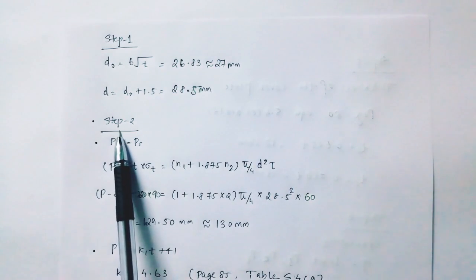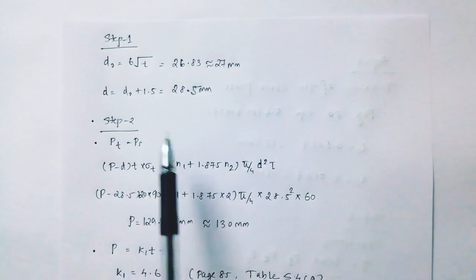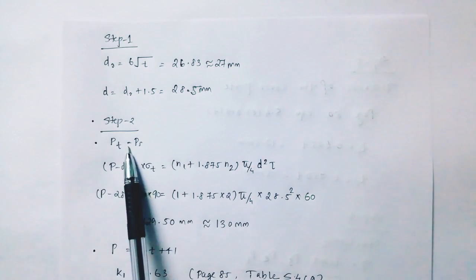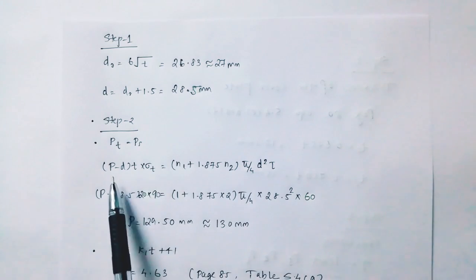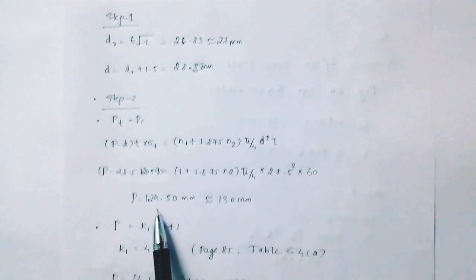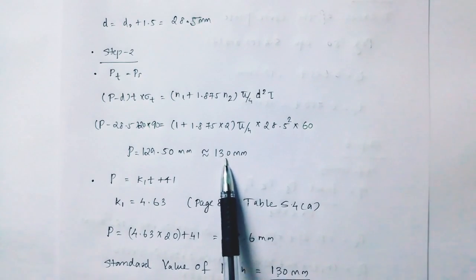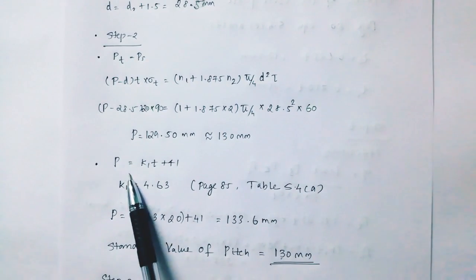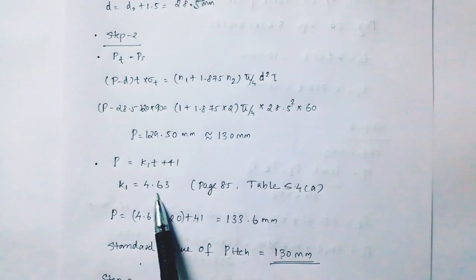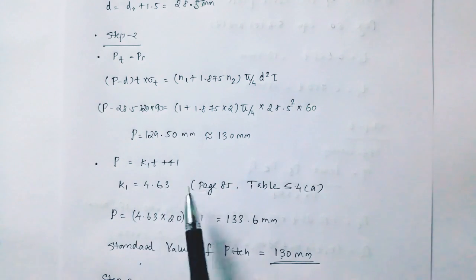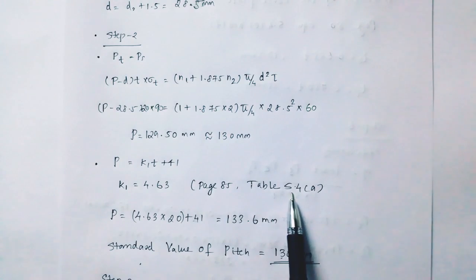Step 2: pt equal to psn. We will find p max and p minimum. Then p equal to 129.50, and p equal to k1t plus 41, k1 equal to 4.63 from page number 85, table 5.4a.